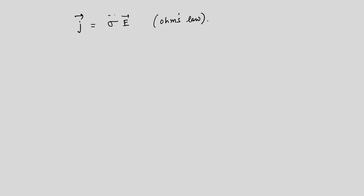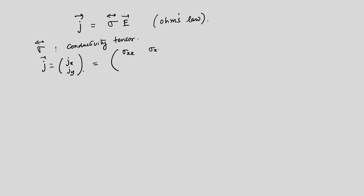J has two components J_x and J_y. Writing this out, sigma is a matrix with elements σ_xx, σ_xy, σ_yx, σ_yy. We must be careful: σ_xy and σ_yx may not be the same. In fact they differ by a sign. I will give a proof of why, for two-dimensional electrons in a perpendicular magnetic field, the conductivity tensor must be antisymmetric: σ_xy = −σ_yx.